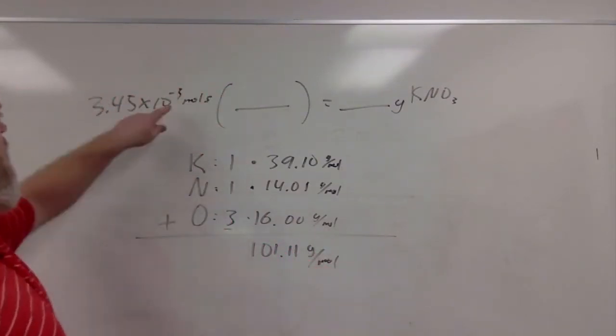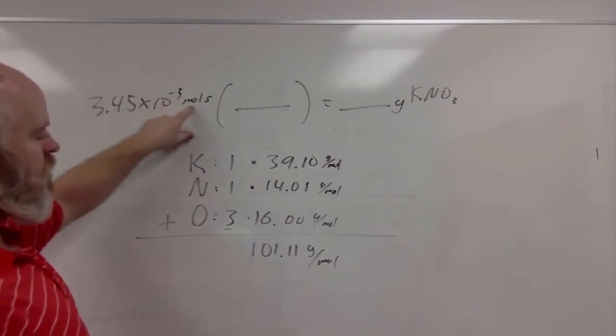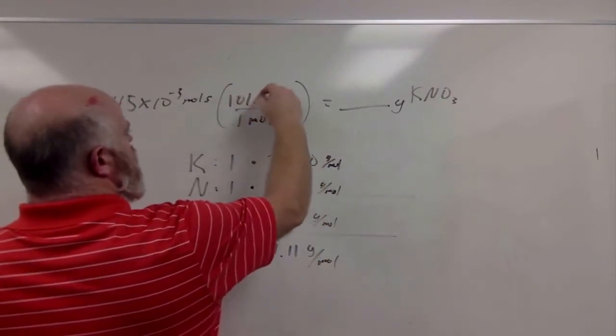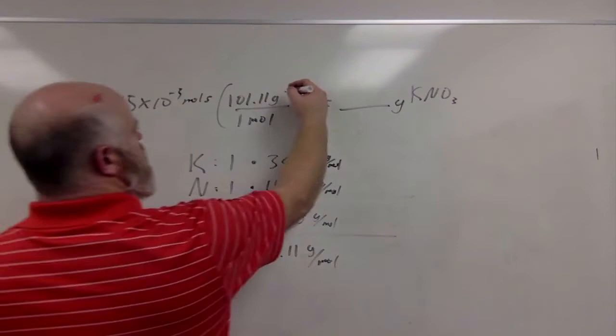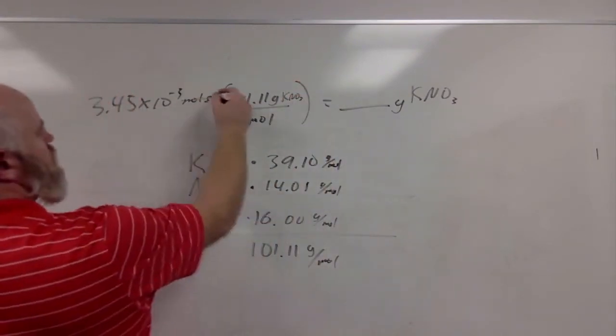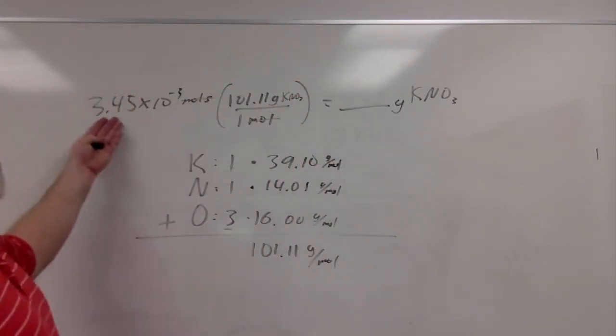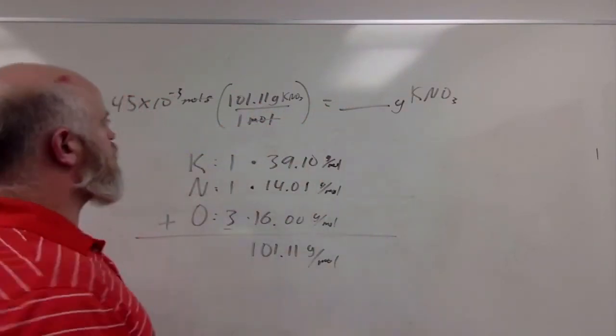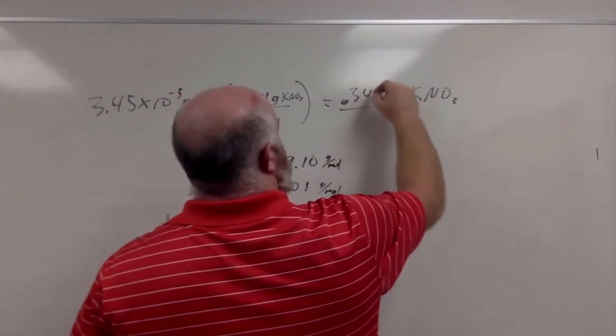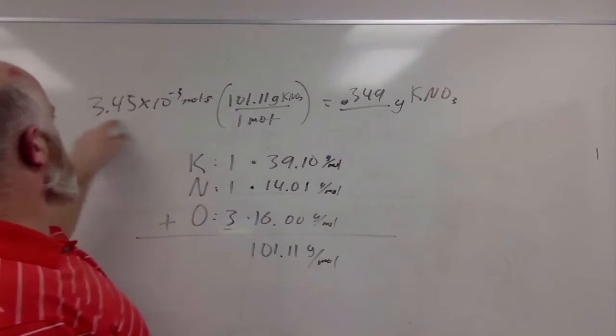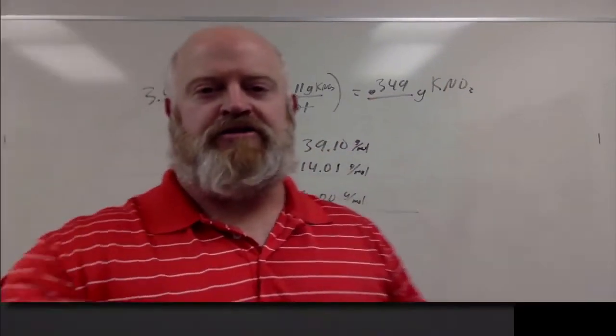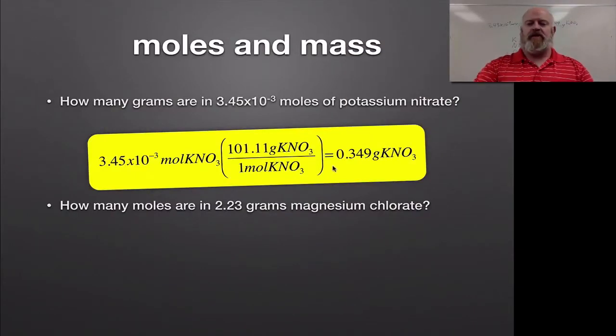If I have 3.45 times 10 to the negative 3 moles, for every 1 mole I have 101.11 grams of potassium nitrate. Moles cancel, and we multiply 3.45 times 10 to the negative 3 times that to get our grams. We end up getting 0.349 grams rounded to three significant figures. We check it on screen, and sure enough, we get 0.349 grams of potassium nitrate.